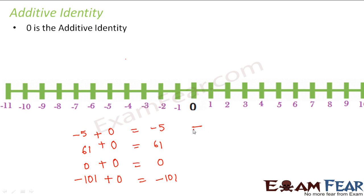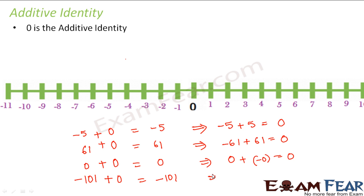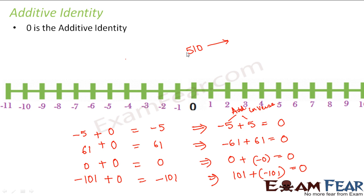On the same grounds, minus 5 plus 5 equals 0, minus 61 plus 61 equals 0, and 101 plus minus 101 equals 0. For every number, there exists another number which when added to it gives 0. These two numbers are called additive inverses of each other. So the additive inverse of 510 is minus 510 — any number with the opposite sign is the additive inverse. This is the concept of additive identity and additive inverse.